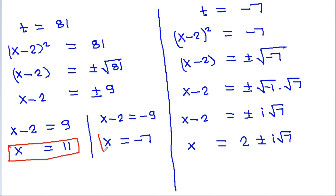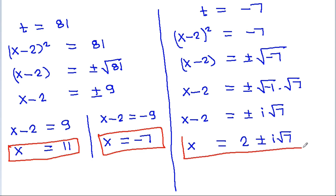So x = 11 and x = -7 are the two real values of x, and x = 2 ± i√7 are the two complex values of x.